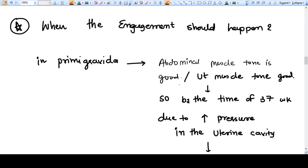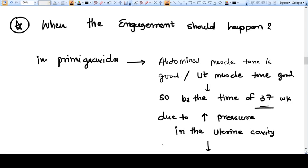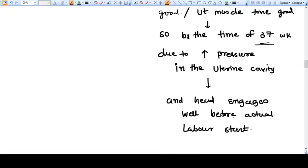In primigravida, a patient who hasn't delivered before, the abdominal muscle tone or uterine muscle tone is generally very strong or good. So by the time of 37 weeks, where the fetus is fully grown and due to this increased pressure in the uterine cavity...